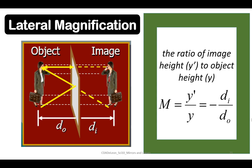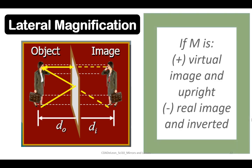Or image distance divided by distance of the object. Now, if the M or lateral magnification is positive, it means that it is virtual image and upright. If it's negative, it is real image and inverted.